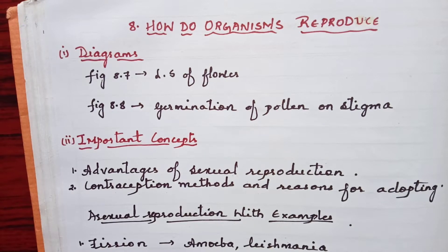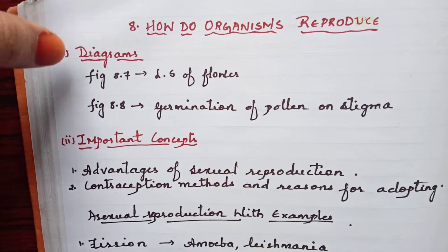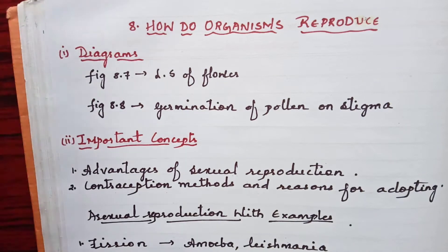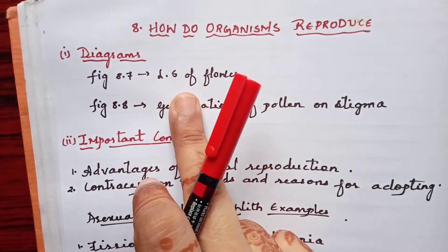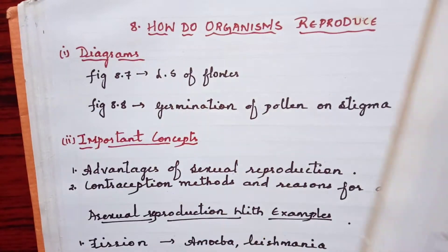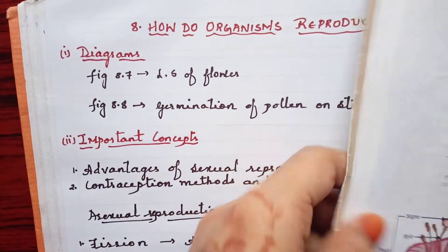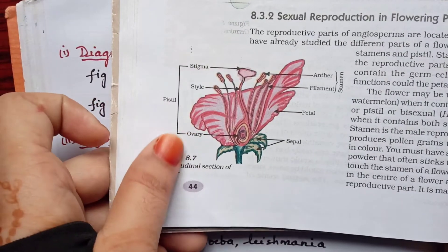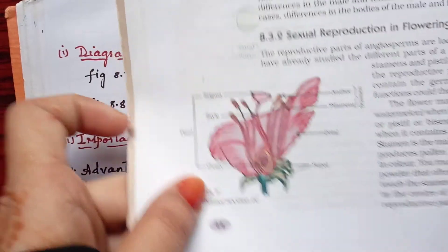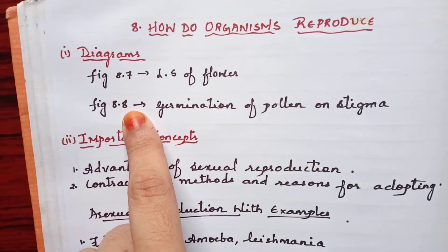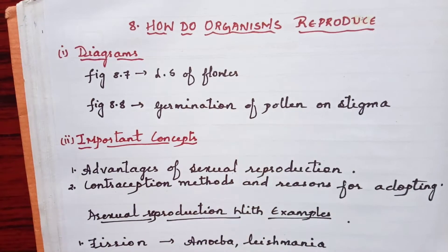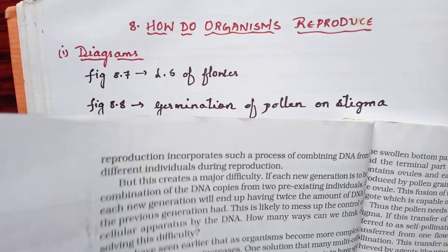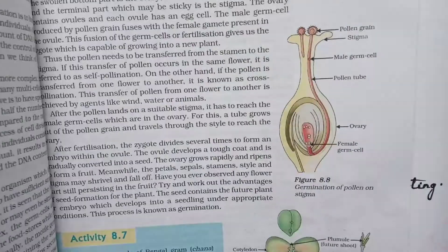Getting started — as usual, starting with the easiest form, which is diagrams. We have got two diagrams from this chapter. The first one is the LSO flower, figure 8.7, on page number 44 of your Part 2 book. The next one is figure 8.8, germination of pollen on stigma, on the next page, page number 45.